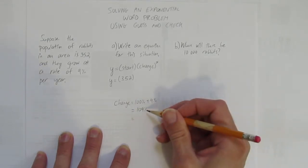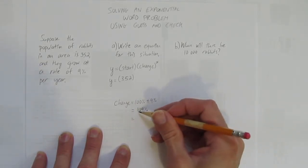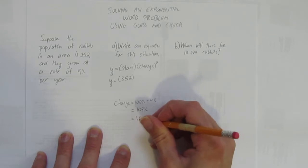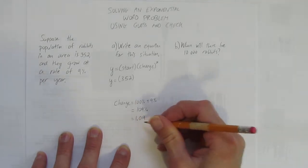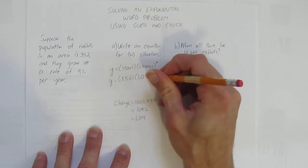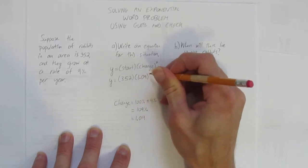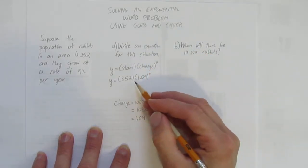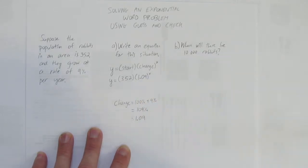Convert that to a decimal by dividing by 100 or shift the decimal over 2. 109% is the same as 1.09. And that's how I get this 1.09 in the equation here. Y equals 352 times 1.09 to the power of X.